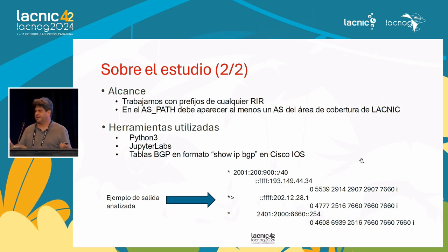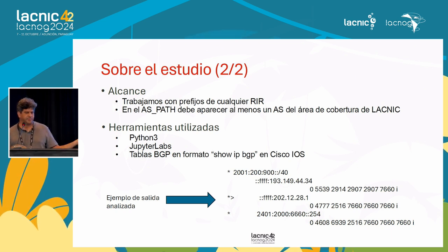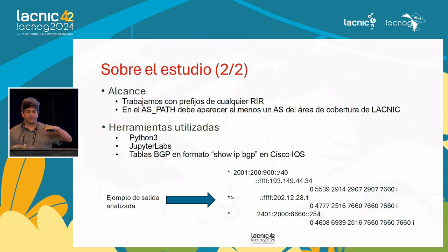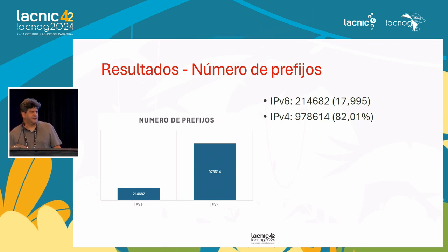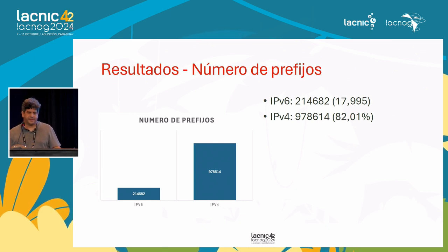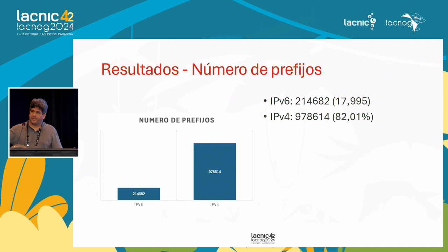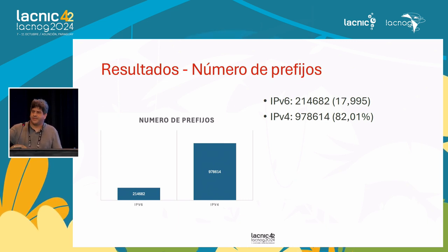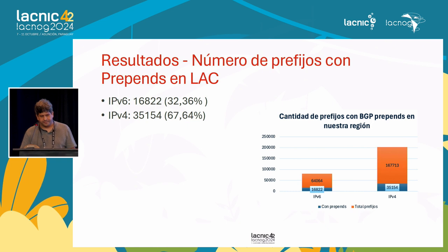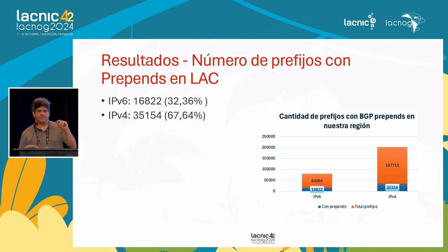Here is an example of the outputs we analyzed, which shows three next hops with the AS path. What we were looking for is that the AS path had repetitions, which indicates a prepend. Now let's look at the results. The only result not directly about prepends is the number of prefixes analyzed: in IPv6, 214,000 prefixes; in IPv4, almost one million — 978,000 prefixes, as of August this year. Remember that each prefix might have many different paths.